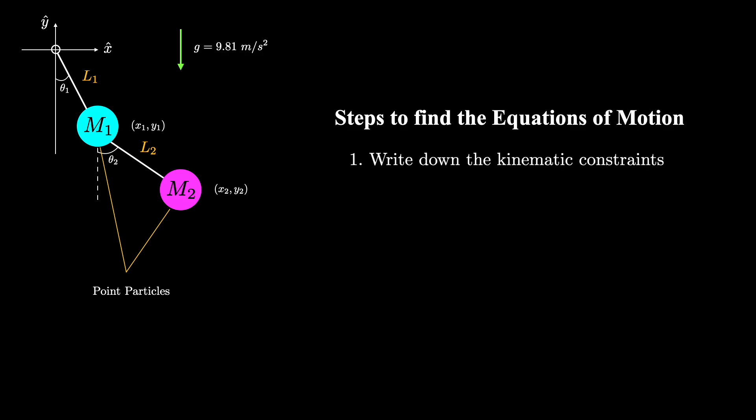First, write down the kinematic constraints. These are the constraints of the system without regard to any forces. In step two, we'll use the results from step one to write down the Lagrangian of this system, which will consist of the kinetic energy minus the potential energy. We could also use Newton's second law to add up all the forces and solve for the acceleration, but the derivation using the Lagrangian approach turns out to be much simpler.